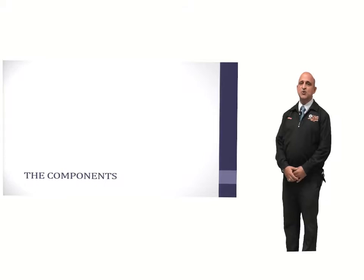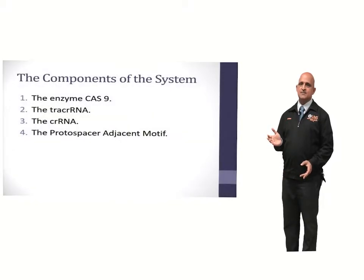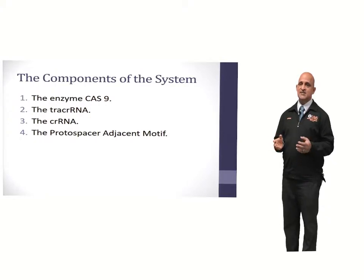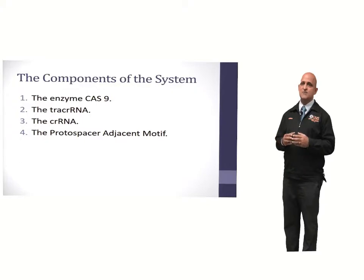Welcome to the second module on the components of the CRISPR-Cas system. The components which have been utilized for genetic engineering and genome editing are the enzyme Cas9, the tracrRNA, the crRNA, and the protospacer adjacent motif.